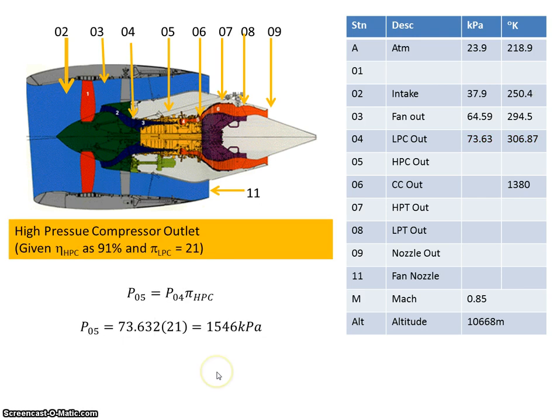Similarly, for the high pressure compressor, it has a compression ratio of 21 and an efficiency of 91%. So I multiply the pressure at station 4, which is 73.63, by our 21, and it gives me an output of 1546 kilopascals.